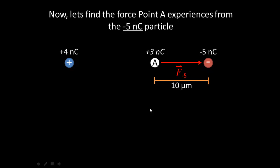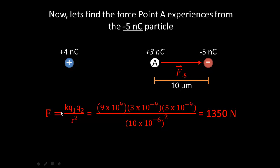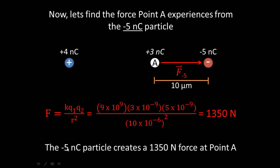Now let's find the force that point A experiences from the minus 5 nanocoulomb particle. The plus 3 nanocoulomb particle at point A and the minus 5 nanocoulomb particle attract, which is why the force is directed towards the minus 5 particle. The minus 5 nanocoulomb particle is 10 micrometers away. Using Coulomb's law: F equals 9 times 10 to the 9th, times 3 times 10 to the minus 9th, times 5 times 10 to the minus 9th, over (10 times 10 to the minus 6th) squared, giving 1350 newtons.